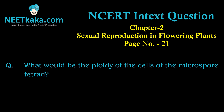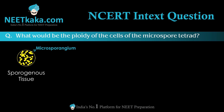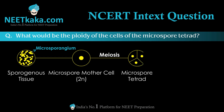The question is simply asking that in the anther there is a sporogenous tissue — we know this is a microsporangium, which is called the pollen sac. In that microsporangium, some cells form a mass called sporogenous tissue, and in that sporogenous tissue there is a meiotic division which produces microspore tetrads. So the question is: what is the ploidy of microspore tetrads?